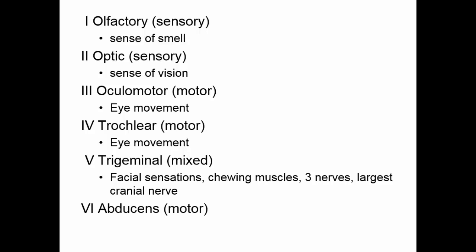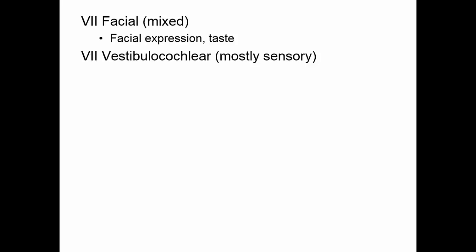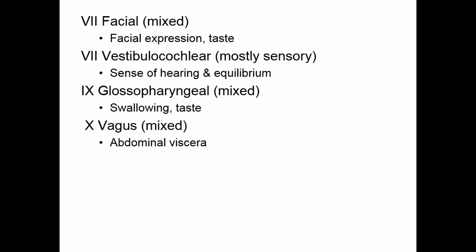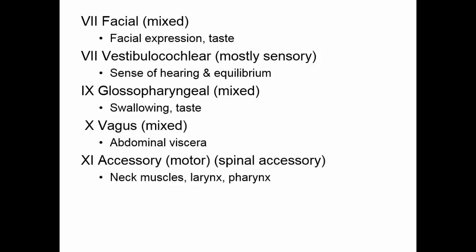Cranial nerve VI is the abducens, a motor nerve — about the only thing you can abduct in your face is your eye. Cranial nerve VII is the facial nerve, a mixed nerve involved in facial expression (motor) and taste (sensory). Cranial nerve VIII is the vestibulocochlear, primarily sensory, handling hearing and equilibrium. Cranial nerve IX is the glossopharyngeal, a mixed nerve controlling swallowing muscles and taste. Cranial nerve X is the vagus nerve, a mixed nerve and the only one that leaves the head and neck, traveling to the abdominal and thoracic viscera. Cranial nerve XI is the accessory (or spinal accessory) nerve, a motor nerve controlling the neck muscles, larynx, and pharynx, involved in swallowing. Cranial nerve XII is the hypoglossal nerve, a motor nerve involved in tongue movement.